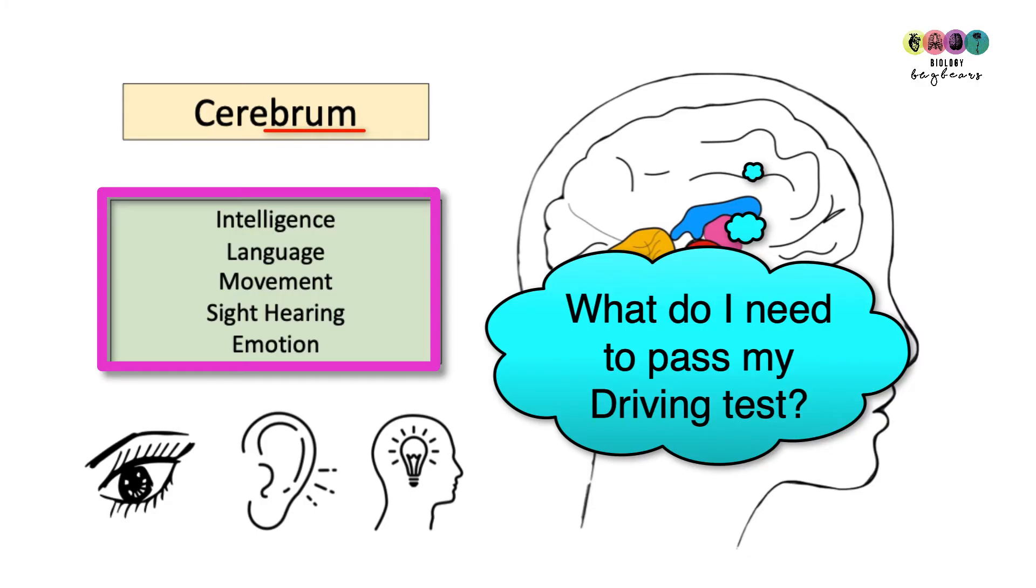A way of remembering them when you're in an exam in June is to think of cerebrum, brumming along in your car off to do your driving test. What do you need to pass? You need to be intelligent, you need language to be able to speak to the examiner, you need to be able to move your arms and your legs, you need to be able to see, you need to be able to hear, and you need emotion to get excited when you pass.